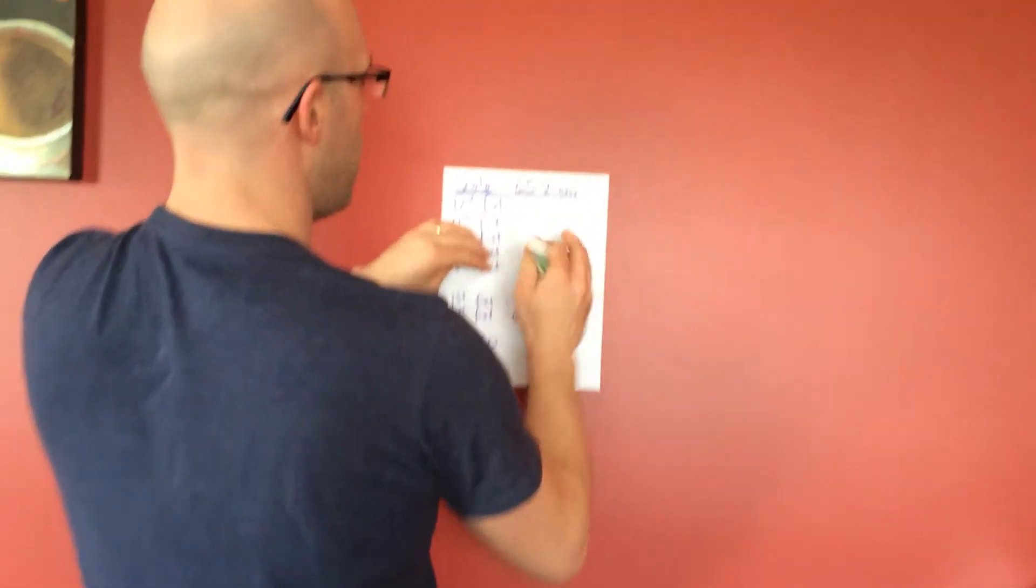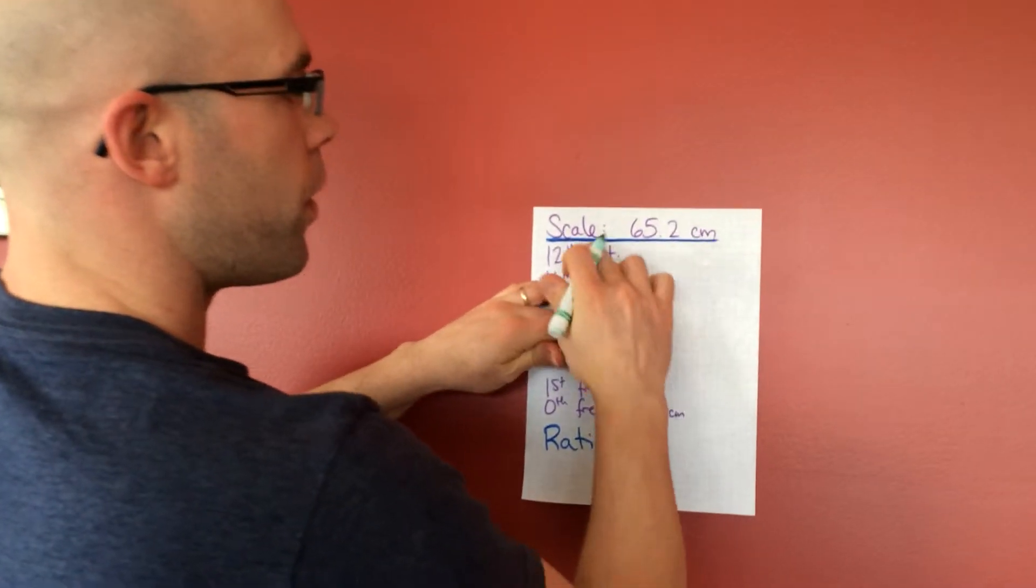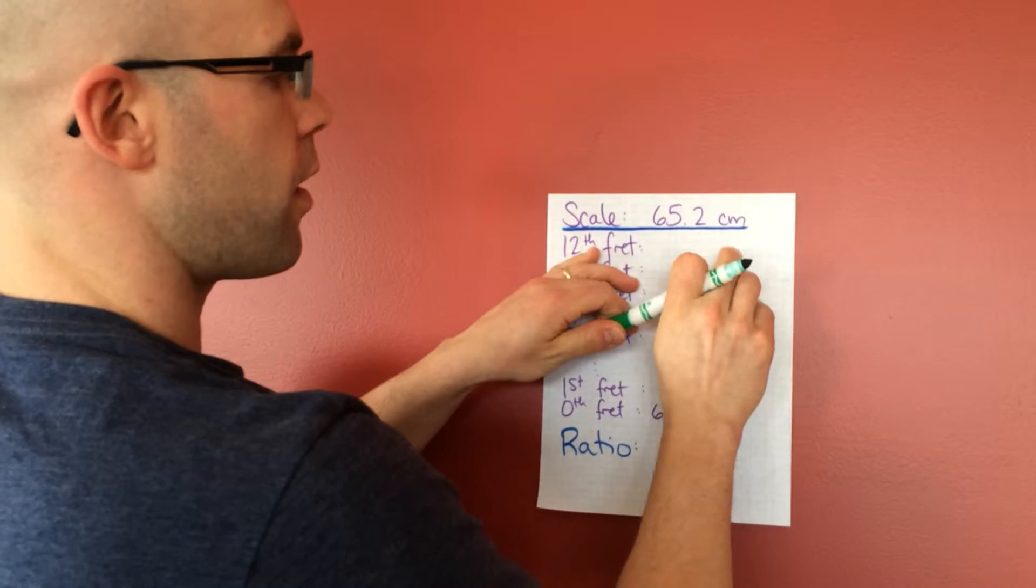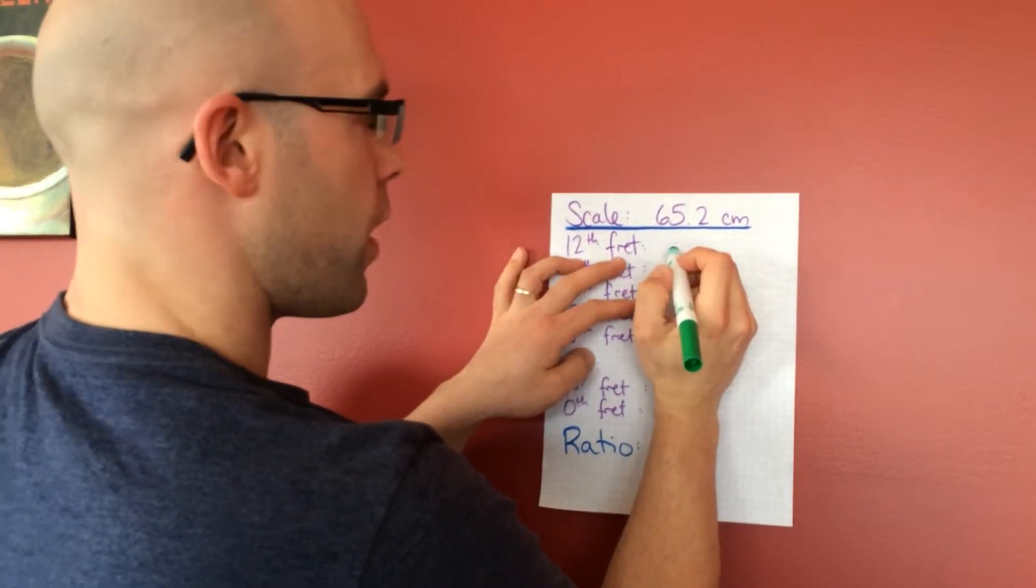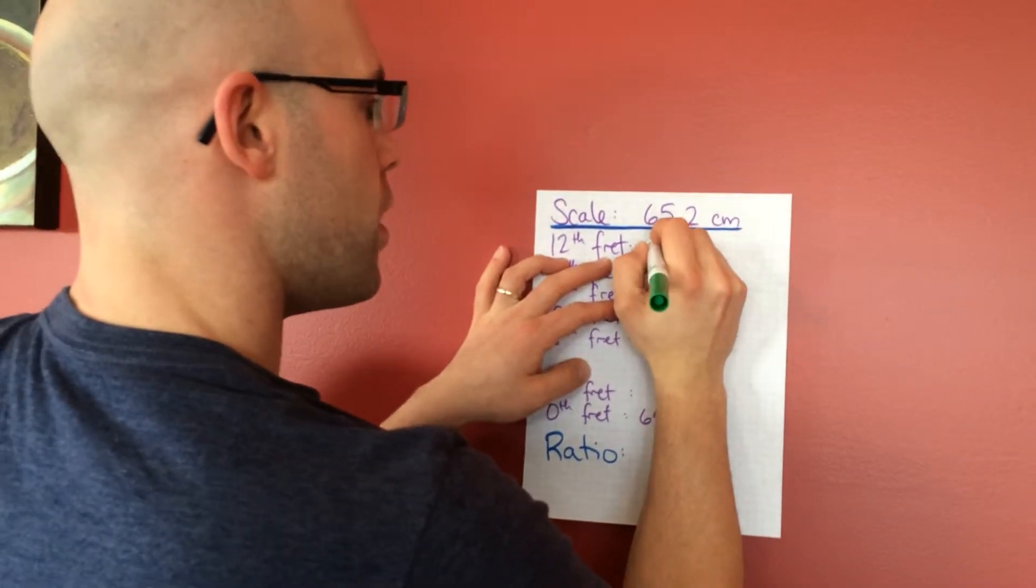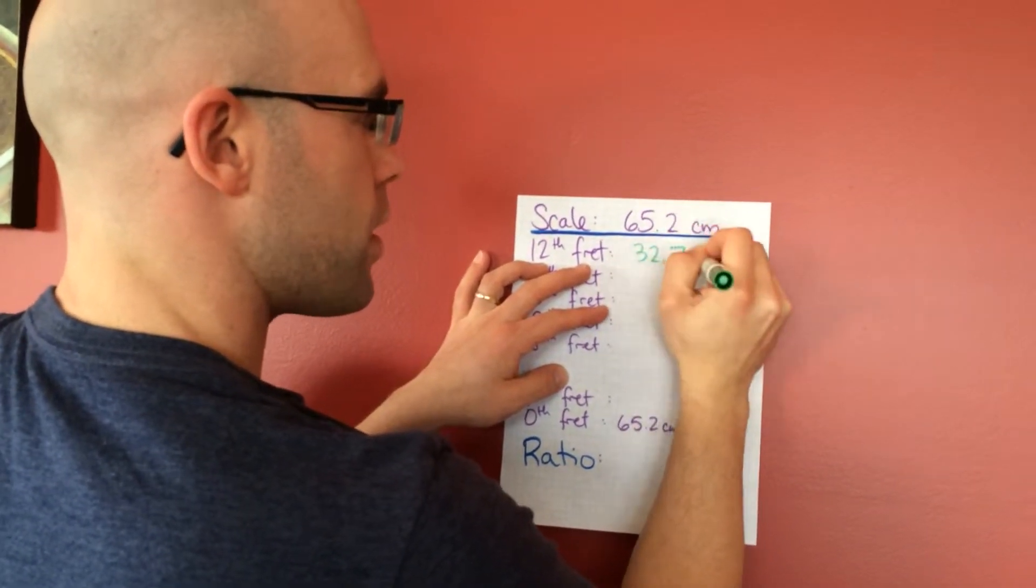So we're going to write this down. First of all, the whole thing is called a scale. That's the length of the entire fretboard, and it's about 65.2 centimeters. And then the 12th fret, if I measure again from the bridge, is about 32.7 centimeters.